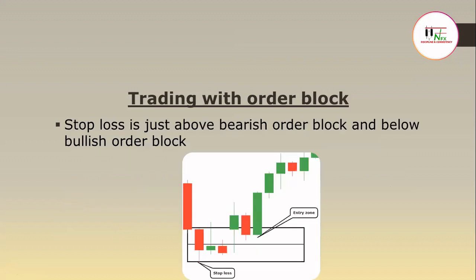Stop loss is just above the bearish order block and below the bullish order block. In this example, you can see this is the order block — the last bearish candle. The middle of the order block is the last point of reference when looking for entries. Most of the time price will retrace to the high of this candle for the bullish order block and continue higher. Or if it penetrates, it will go to the middle of this range. But if it goes below this range, then this order block will be invalid and you'll have to look for another order block on the left.